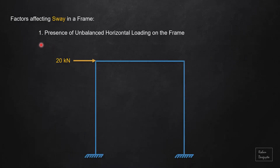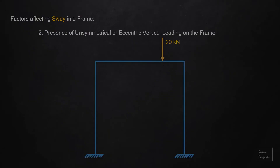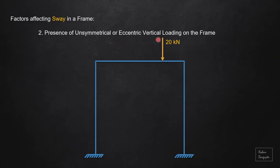The first factor is the presence of unbalanced horizontal loading on the frame. As you can see, this 20 kN horizontal load is unbalanced, so therefore this will cause the frame to sway, most probably towards the right. Now if I have a 20 kN acting equally and opposite, it becomes a balanced horizontal loading and there will be no horizontal deflection — a non-sway frame. But if I have a 10 kN which is unbalanced, then again it will be a sway frame.